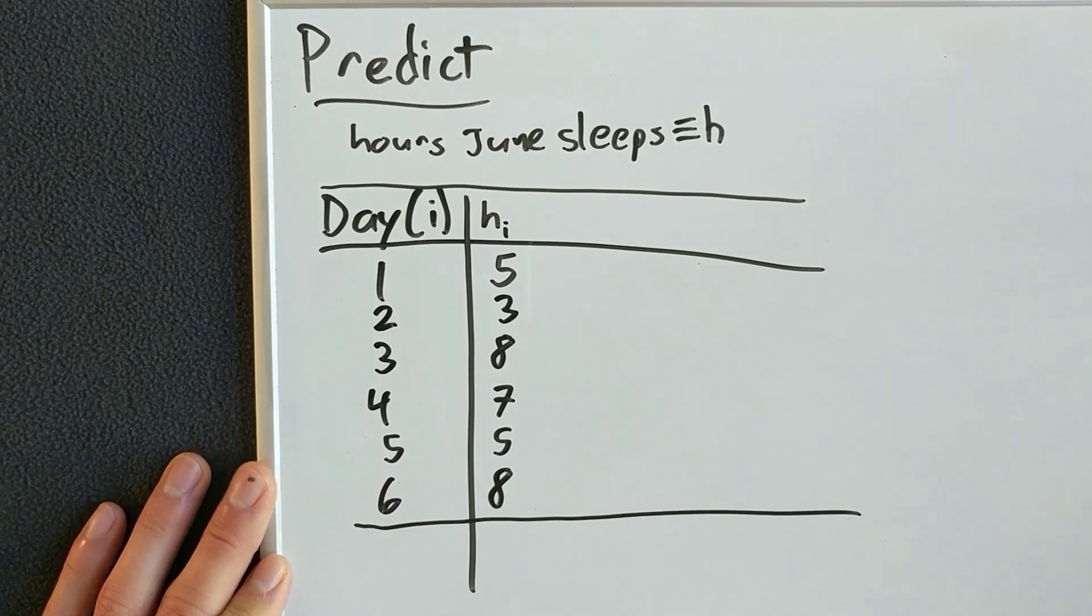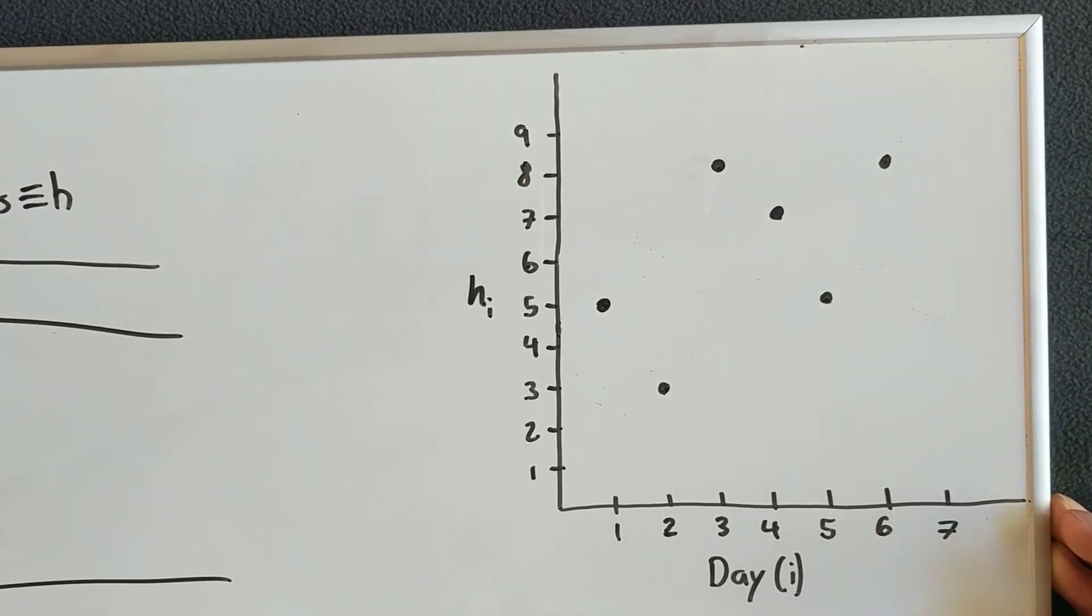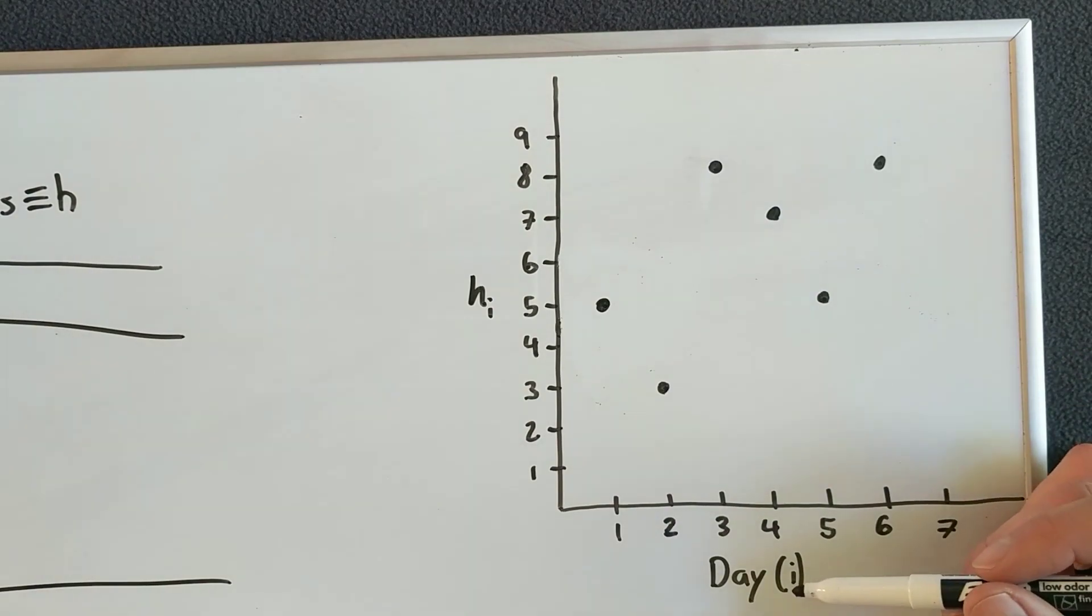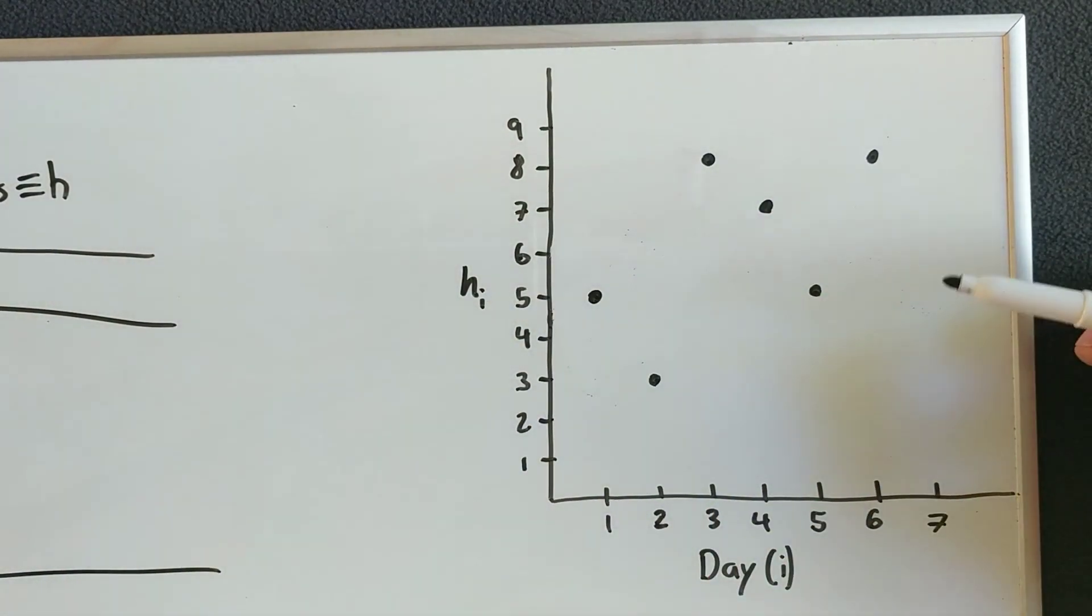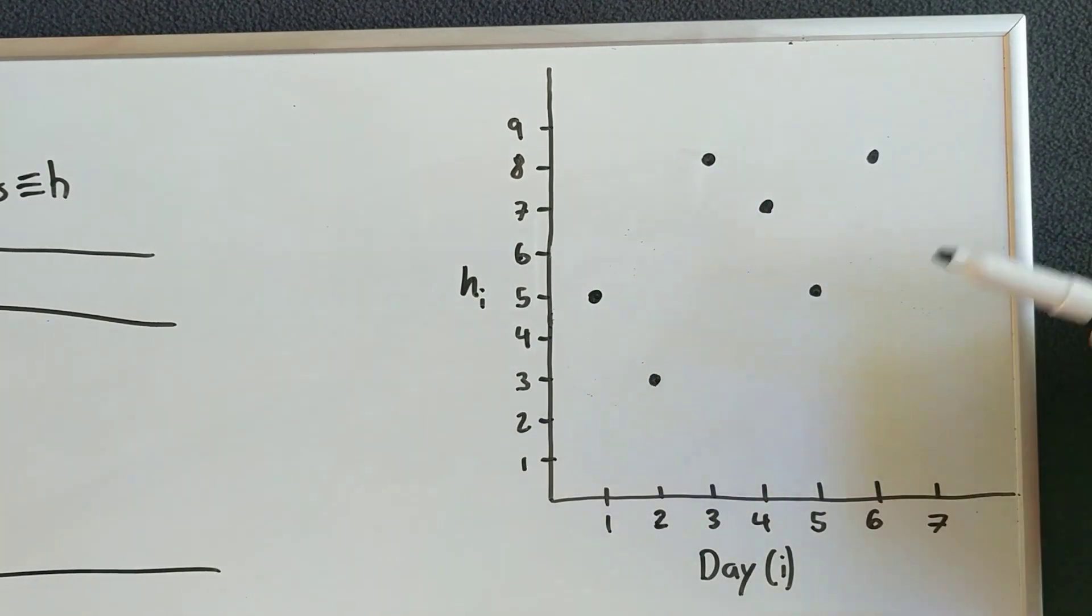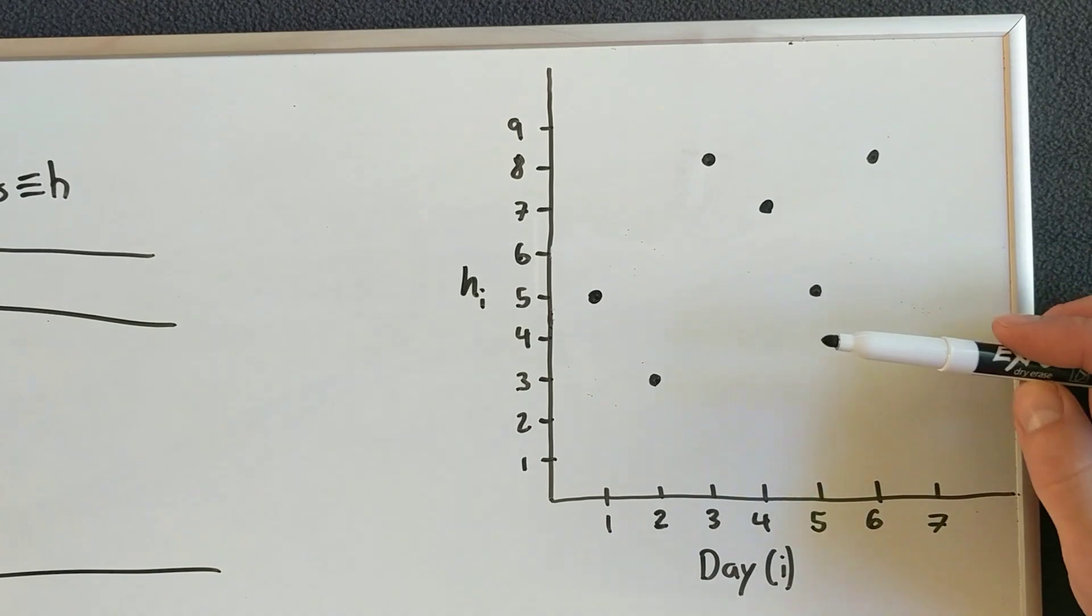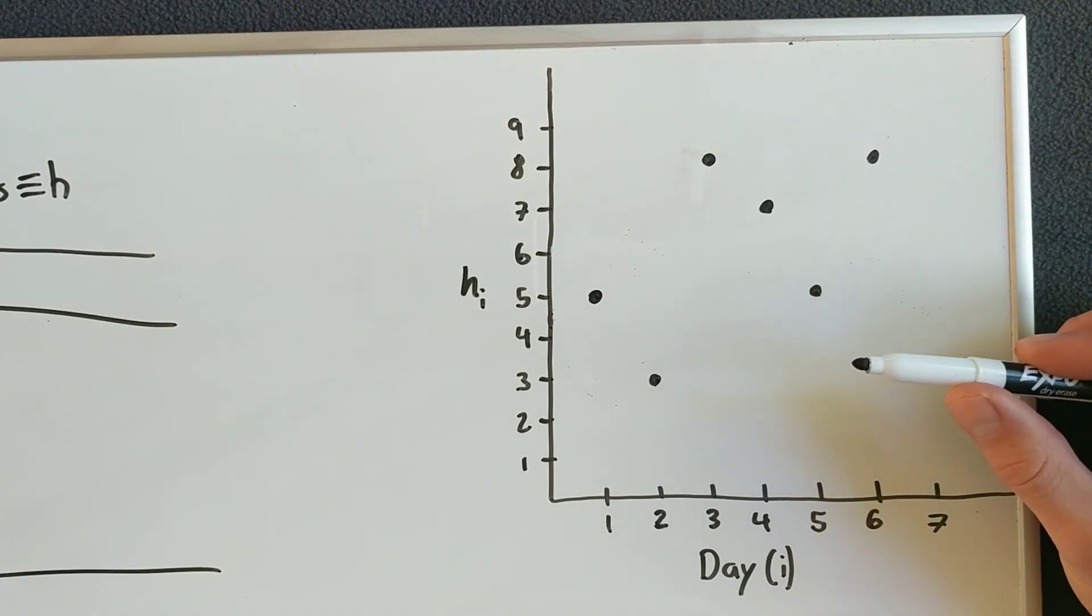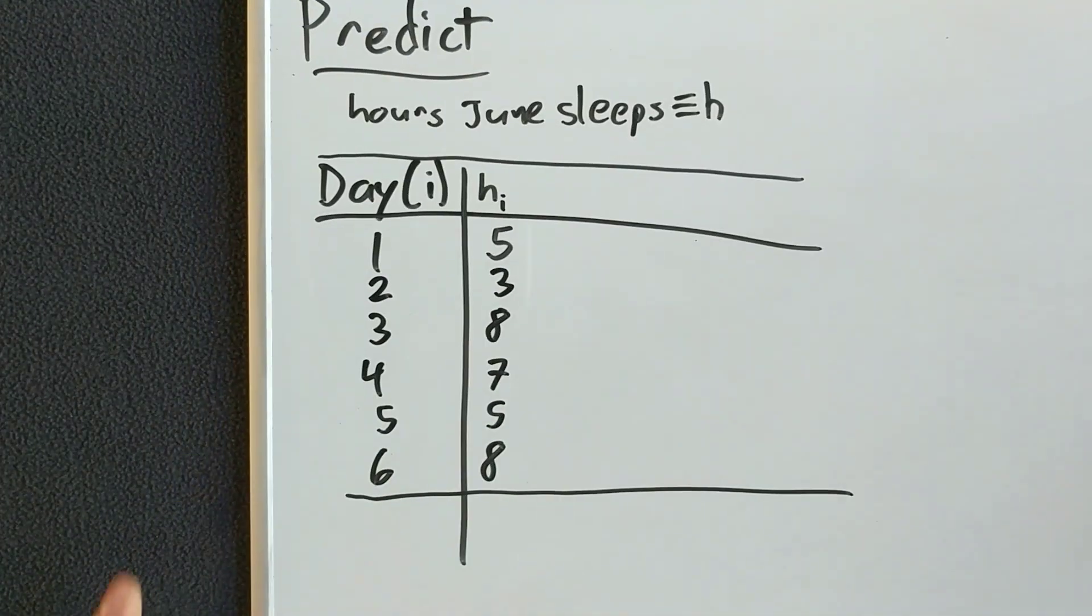So first, let's go ahead and plot this, which I've already done. And we have day on the x-axis and hours slept on the y-axis. And at first glance, it kind of just looks like a random clump. So what's the first thing that we should try to do when predicting something? Well, I always find the average.